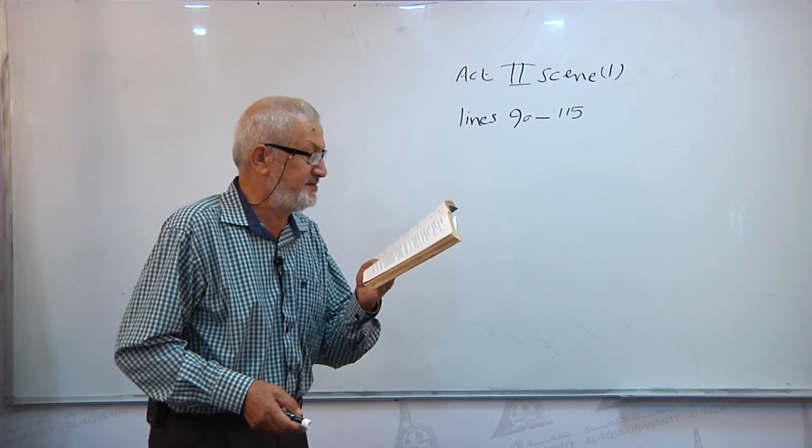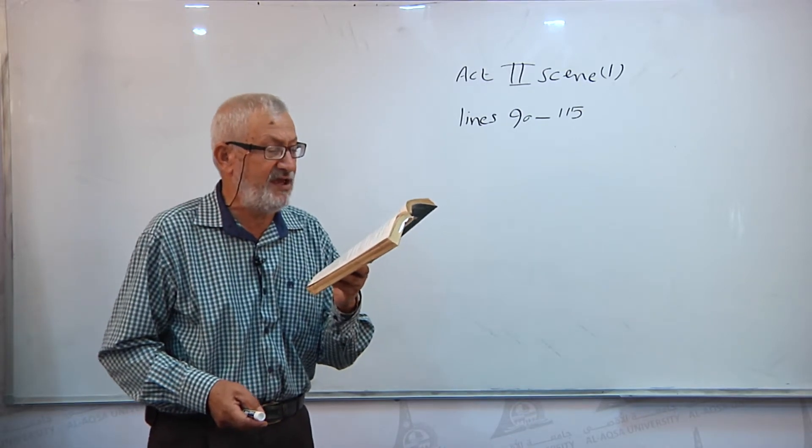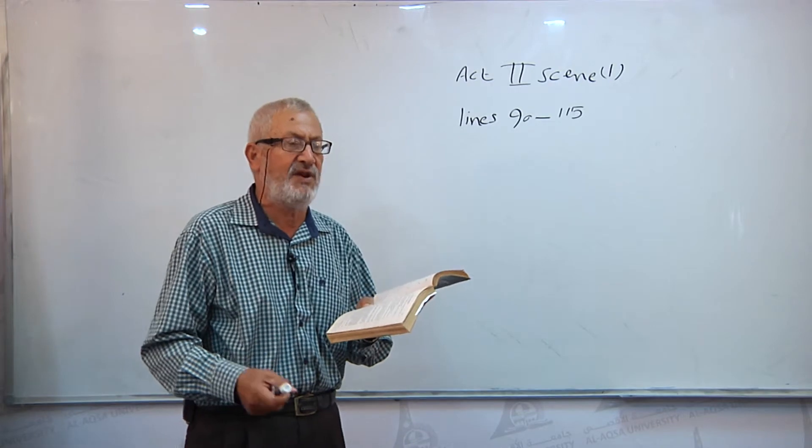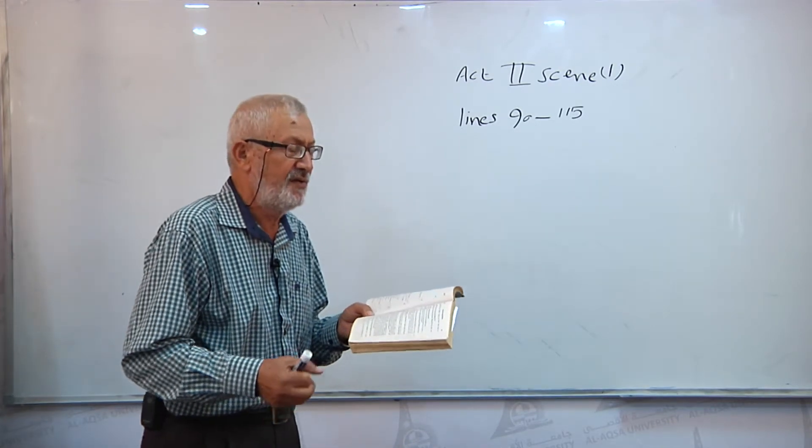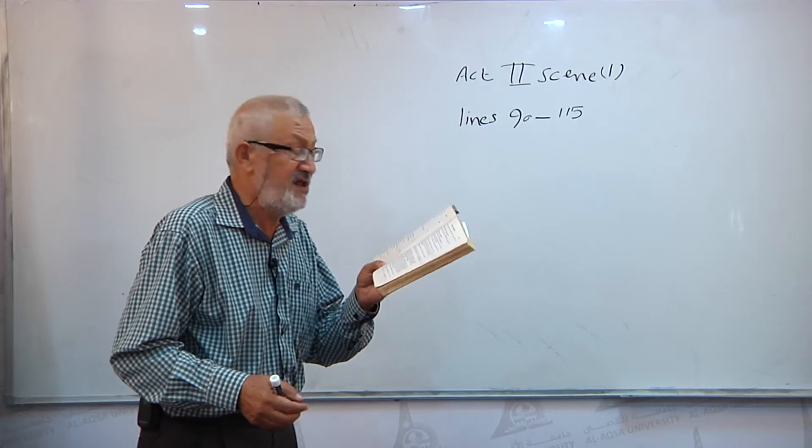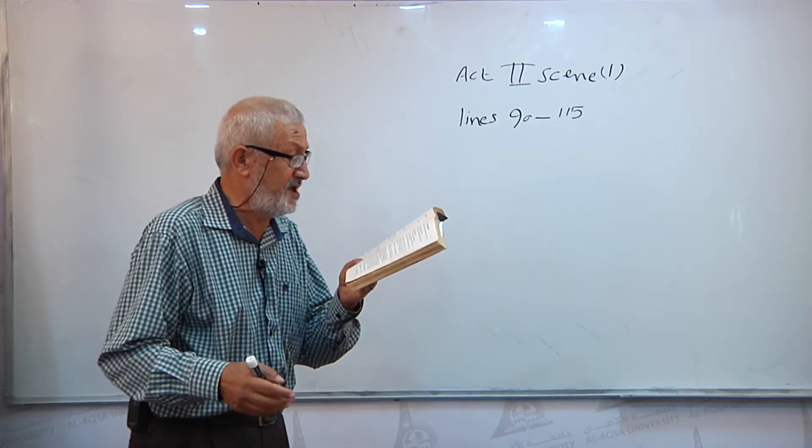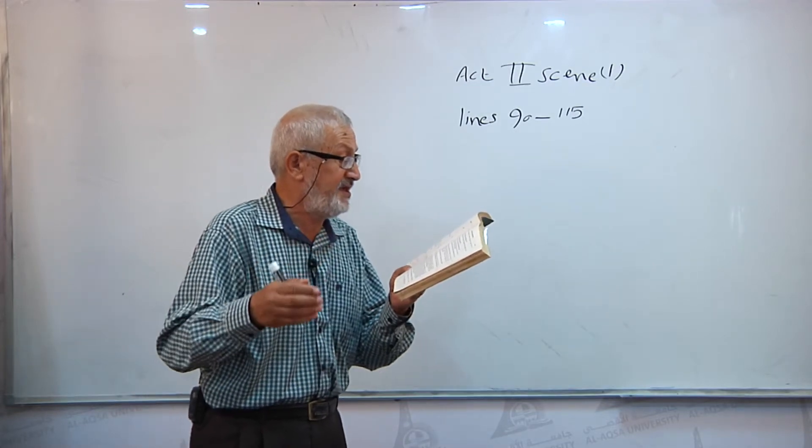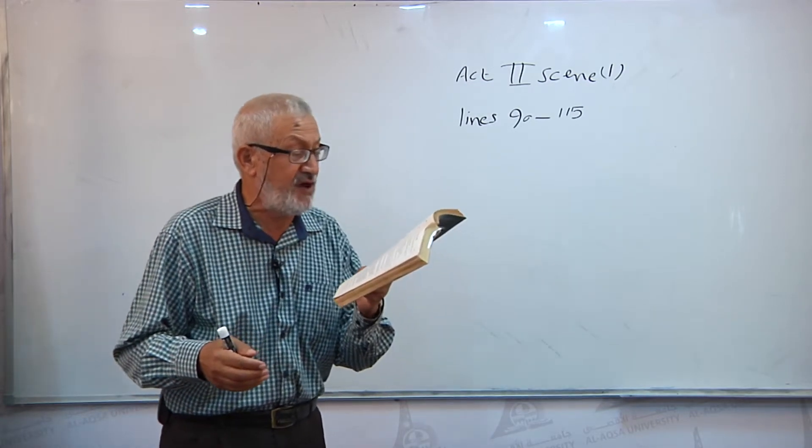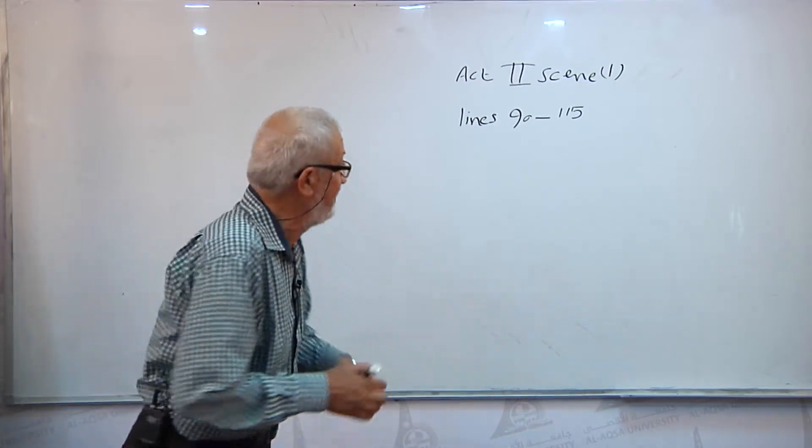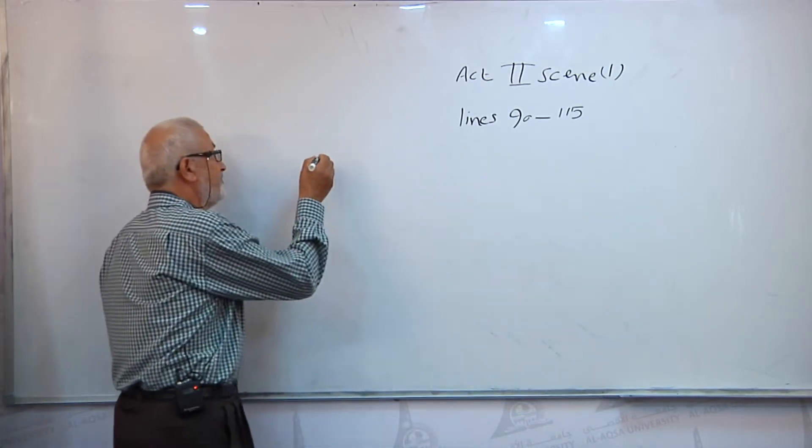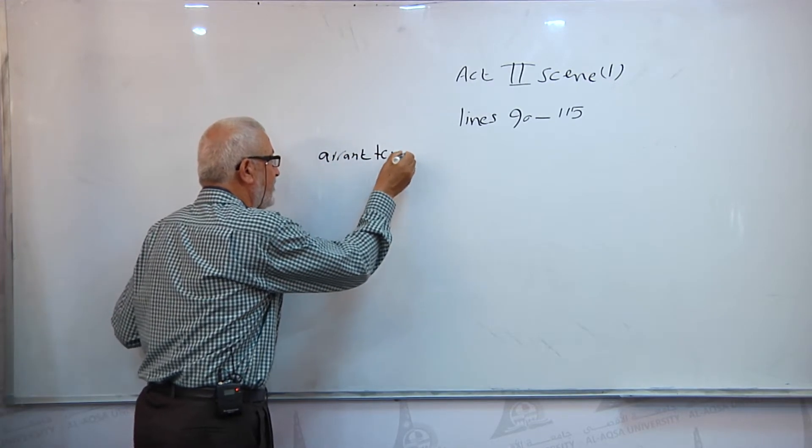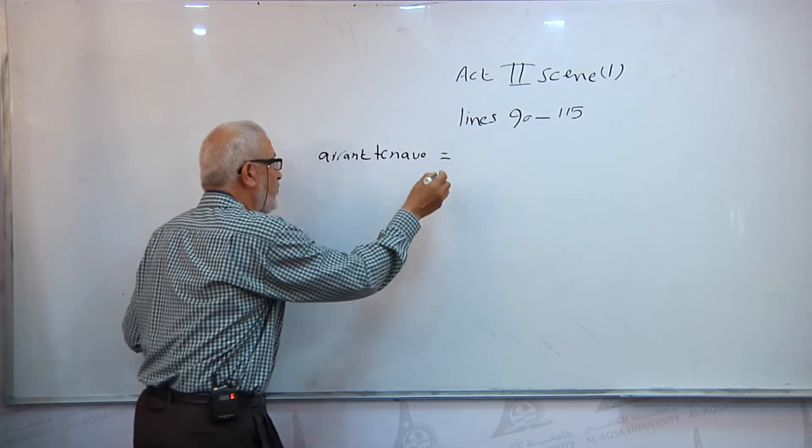Hamlet says there is never a villain dwelling in Denmark. There is no more villain dwelling in Denmark than Claudius. Villain means a cursed person, a bad person. But he is an arrant knave, a complete villain. Arrant knave means a complete villain.